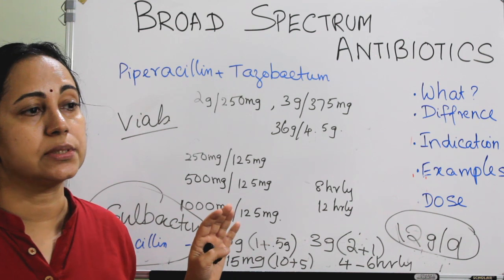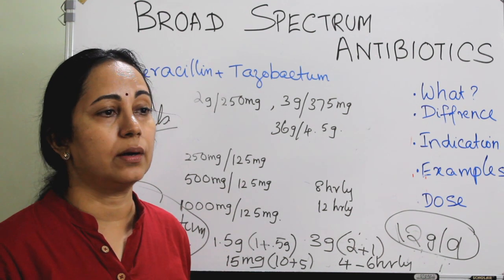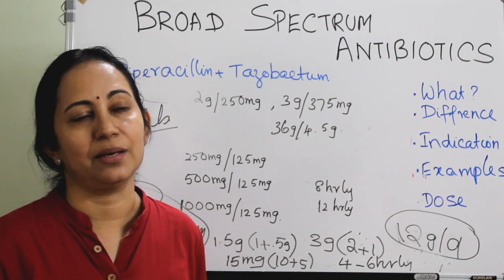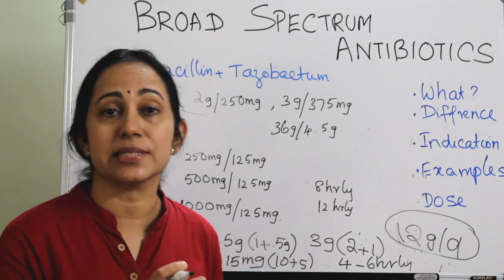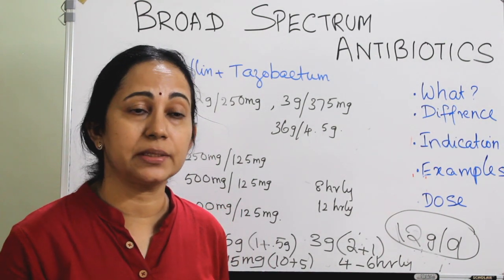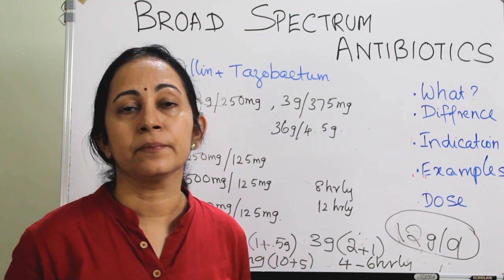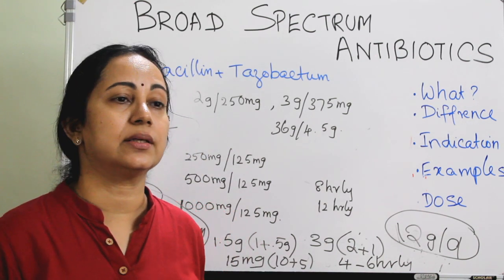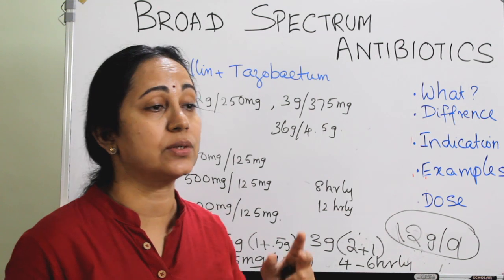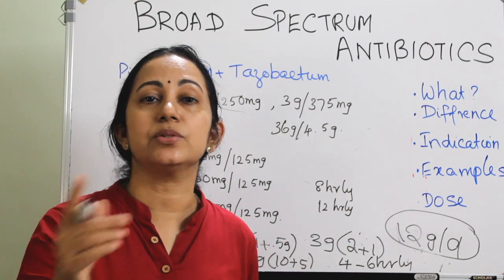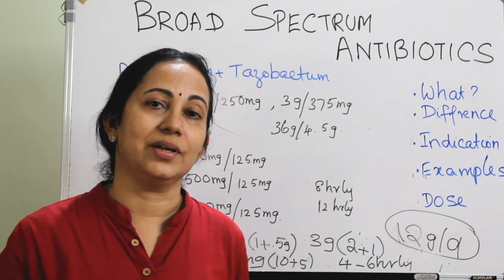Now you know the mechanism of action of broad spectrum antibiotics, how it differs from narrow spectrum and extended spectrum antibiotics, and examples with dosage. Remember that broad spectrum antibiotics are used as empirical therapy, there is a chance of multiple drug resistance, and they will kill the natural microbiomes present in your GIT. Care should be taken, and before starting empirical therapy, always send a swab for culture and sensitivity to the microbiology lab so that you can get the isolated pathogen for a definitive therapy. Thank you.